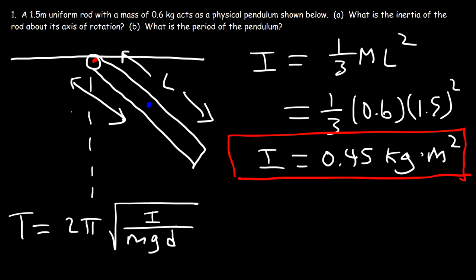So this is D in this example. Because we're dealing with a uniform rod, we assume the mass is distributed uniformly, so the center of gravity is simply at the middle. Therefore D is half of L. If L is 1.5, then D is 1.5 divided by 2, or 0.75 meters.